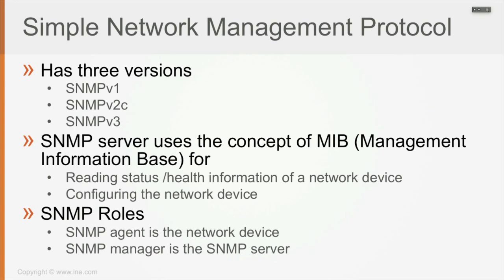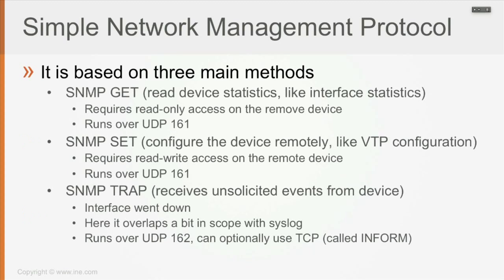In SNMP communication, we have two roles: the SNMP agent, which is going to be the network device, and the SNMP manager, which is going to be the SNMP server. SNMP, in order to perform its job, is based on three main methods regardless of its version. All of them are running via the same three main methods to achieve its scope.